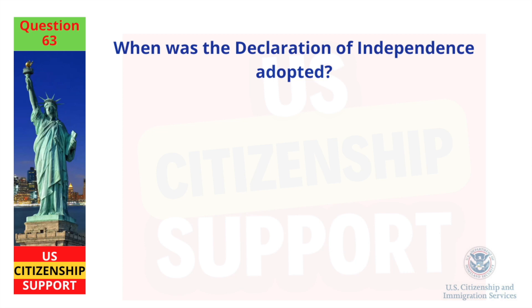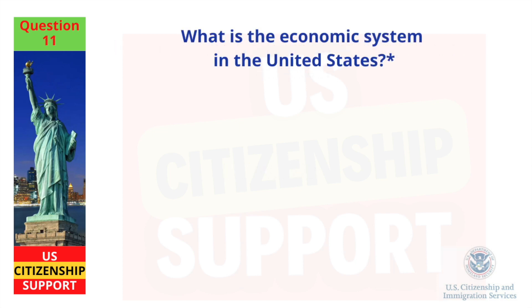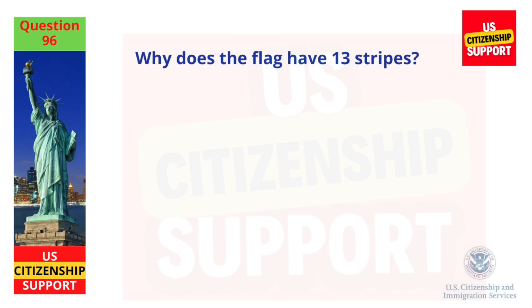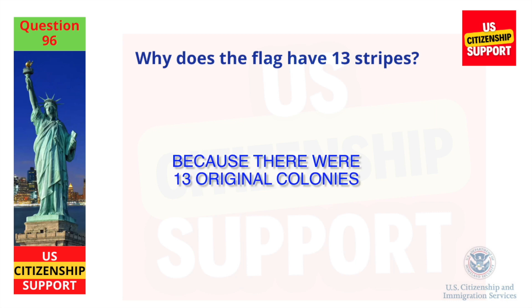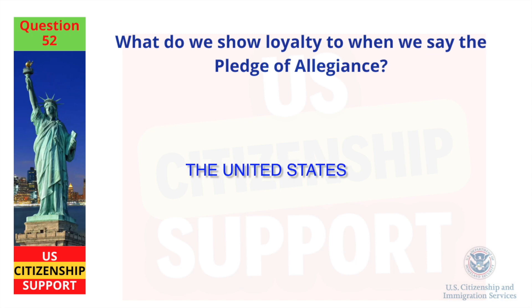When was the Declaration of Independence adopted? July 4, 1776. What is the economic system in the United States? Market economy. Why does the flag have 13 stripes? Because there were 13 original colonies. What do we show loyalty to when we say the Pledge of Allegiance? The United States.